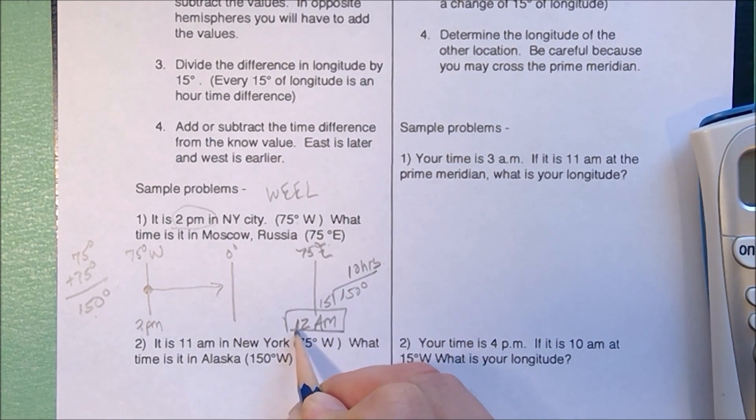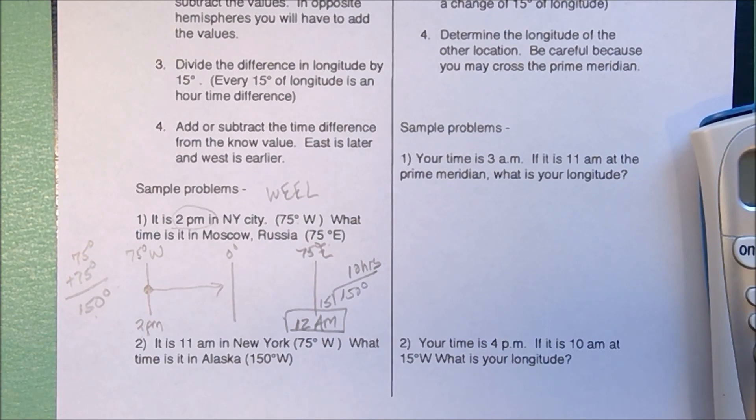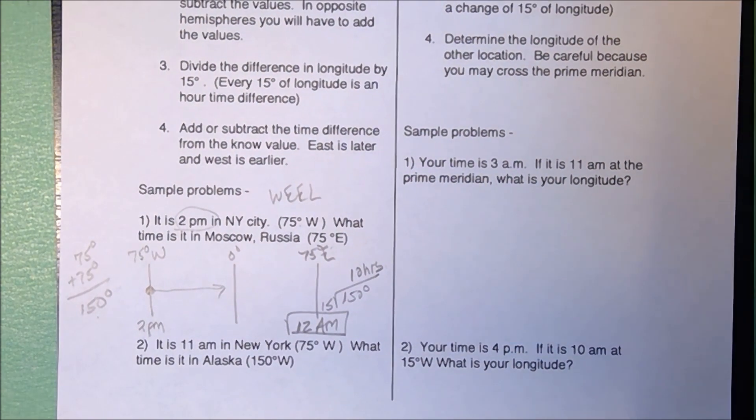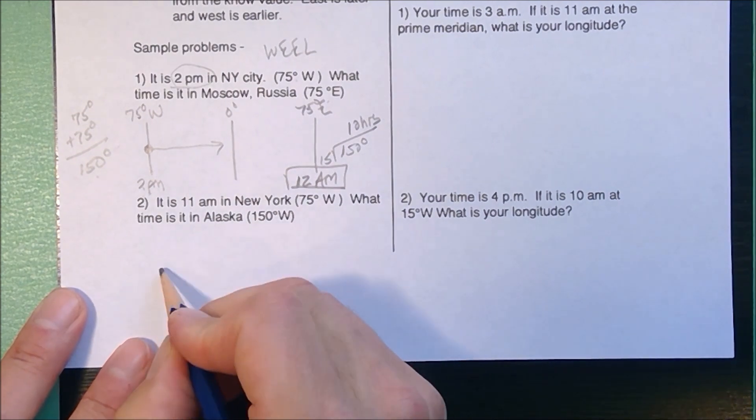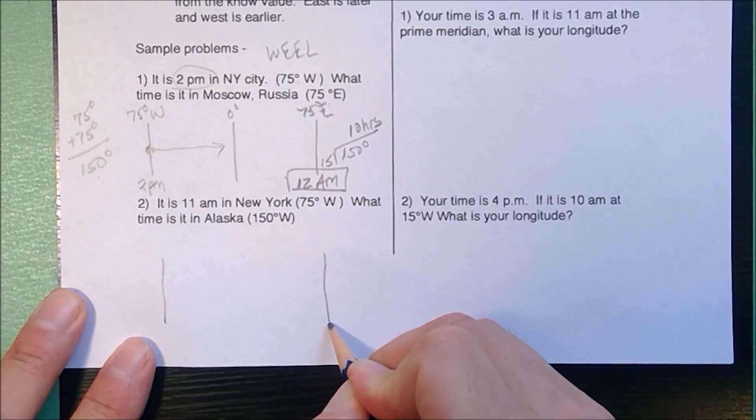The answer is 12 a.m. In some cases, if you really need to, you could draw a clock face and count forward and back if you can't figure out the times. Example two: step number one is draw a map.